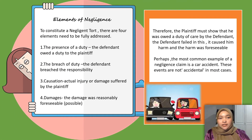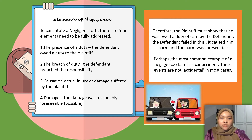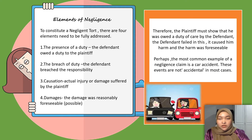Next, the elements of negligence. To constitute a negligent act, there are four elements that need to be fully addressed. First, the presence of a duty — the defendant owed a duty to the plaintiff. Second, the breach of a duty — the defendant breached the responsibility. Third, causation — actual injury or damage suffered by the plaintiff. And lastly, damages — the damage was reasonably foreseeable.